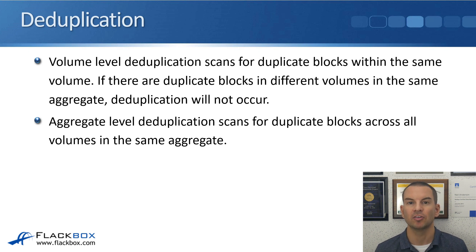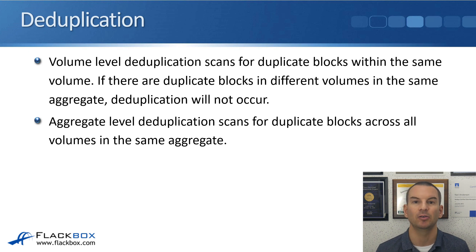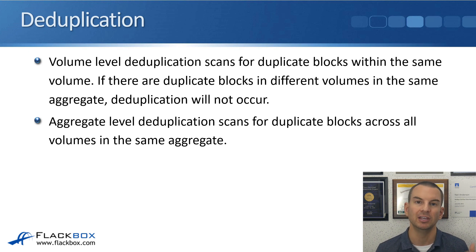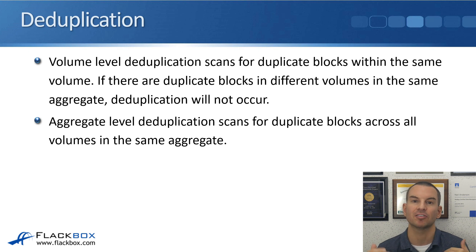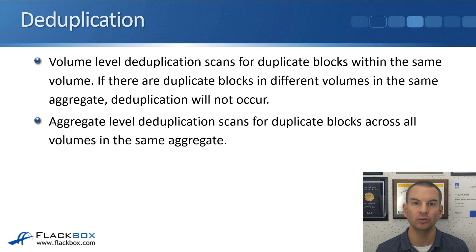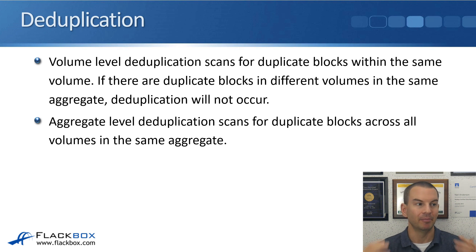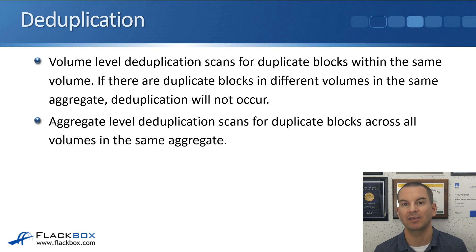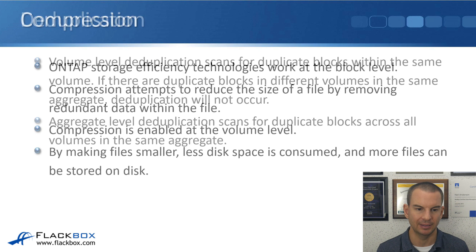With FAS systems, if you knew you were going to be storing data with a lot of duplicate blocks, you would always want that in the same volume and enable deduplication on that volume to get the largest physical space savings. But in AFF, it can be in different volumes within the same aggregate.